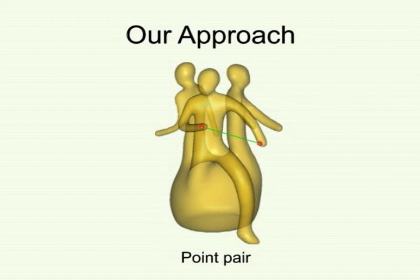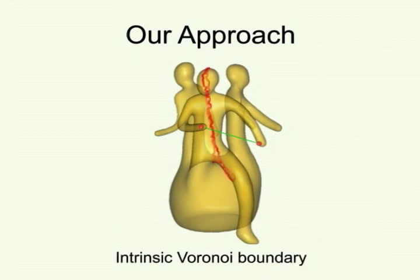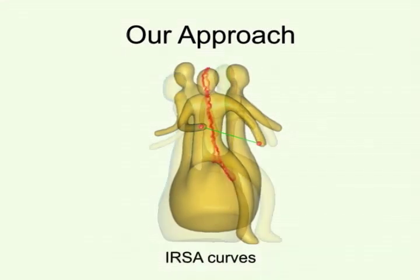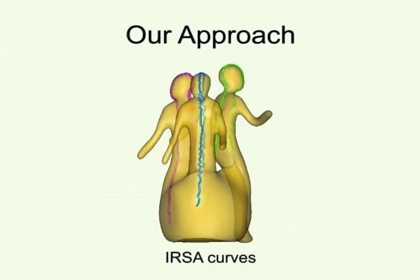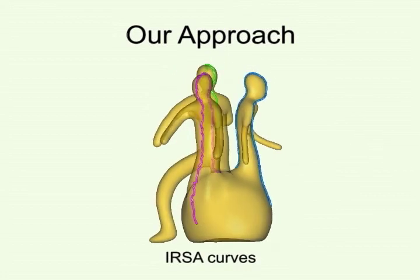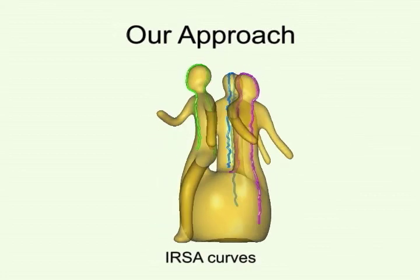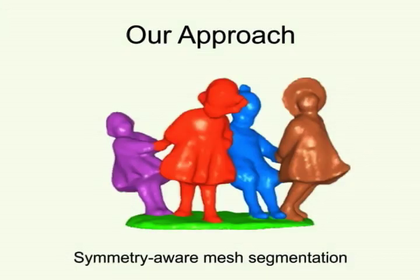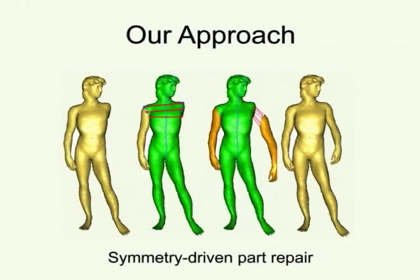The voters are point pairs, and each pair votes for their weighted intrinsic Voronoi boundary. From the IRSA transform, we extract a set of explicit IRSA curves on the mesh. These IRSA curves can be utilized for applications such as symmetry-aware segmentation and part repair.